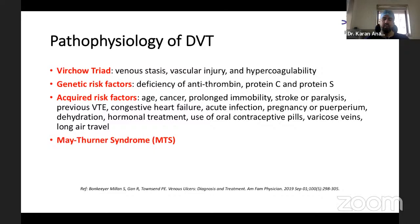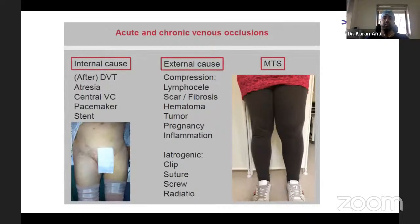May-Thurner syndrome is a condition in which the left common iliac vein is compressed by the right common iliac artery, which triggers acute DVT. Internal causes include venous atresia, stenosis, prior pacemaker, or prior stent. External causes include lymphocele, post-op patients, tumor, pregnancy, and iatrogenic causes, as well as May-Thurner syndrome with its congenital compression of the left common iliac vein.